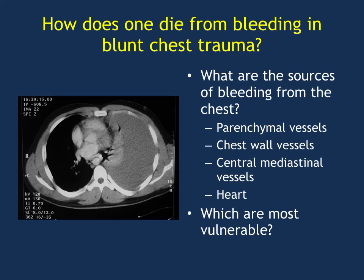Now let's go to bleeding. We talked about bleeding as a cause of mortality and morbidity. You have to think about what are the major causes of bleeding — is it going to be your little vessels in the lung, or bigger vessels in the chest wall, or even the heart, the aorta, or the IVC? It's important to review the anatomy and see what the vessels are and how they relate. On the scan here, you can see a big left hemothorax.